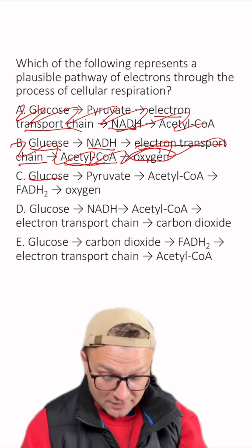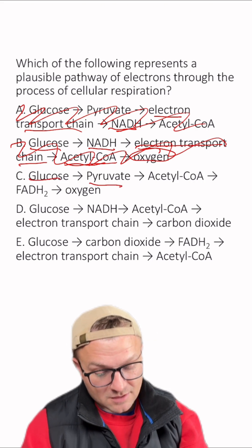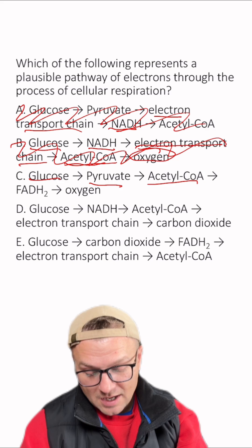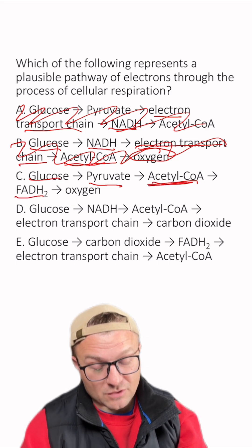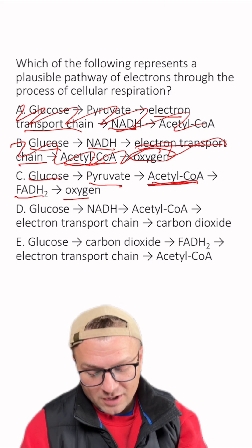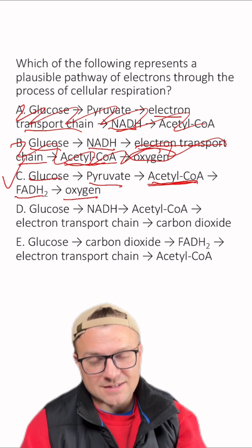C. Glucose, yes. Pyruvate, yes. Acetyl-CoA, good. FADH2, that comes out of the Krebs cycle that the acetyl-CoA feeds into, so that's good. And then oxygen as the final electron acceptor. I think it's C.